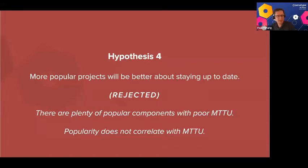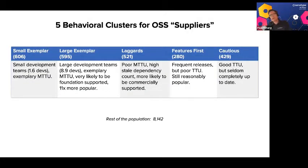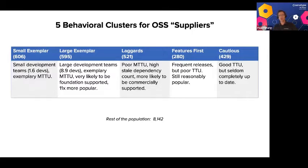Unfortunately, that hypothesis did not prove out to be true. We found many components with plenty of public visibility that still have poor mean time to update and mean time to repair. The exponential curve of everything going on means we simply can't keep up with it.